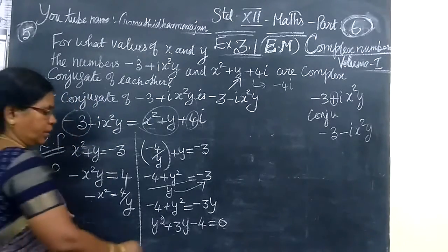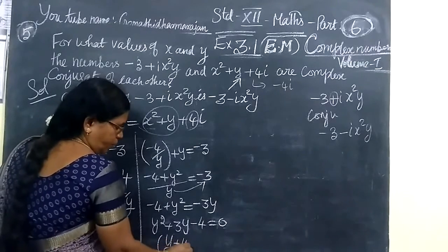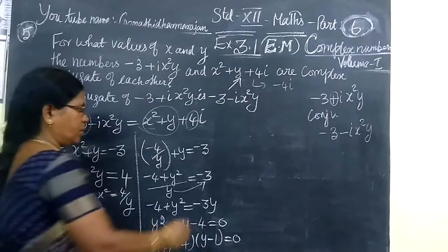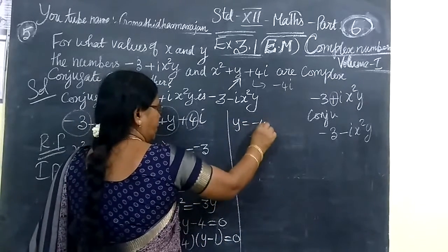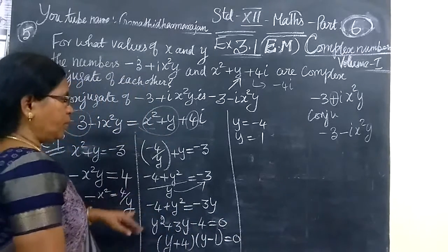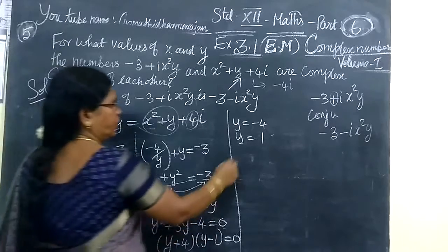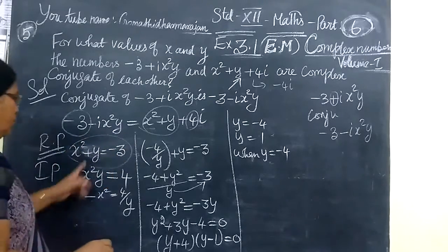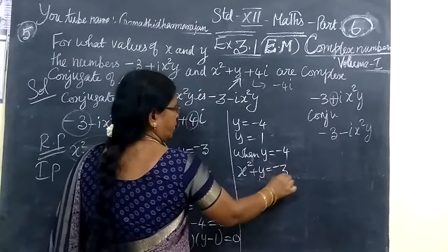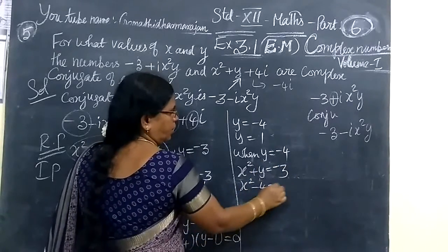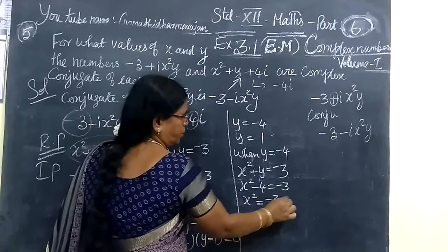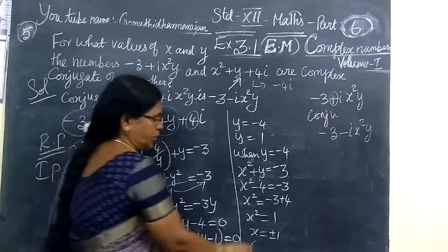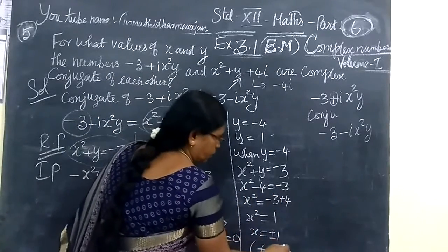Therefore, y squared plus 3y minus 4 equals 0 factors as y plus 4 times y minus 1 equals 0. Here: minus 4 plus 4 is zero, minus 3 plus 3 is zero. So y equals minus 4 or y equals 1. Now you take it — when y equals minus 4, substitute into x squared plus y equals minus 3. You get x squared plus minus 4 equals minus 3, so x squared equals minus 3 plus 4, which is 1. Therefore x equals plus or minus 1. So one set of solutions: x equals plus or minus 1 and y equals minus 4.